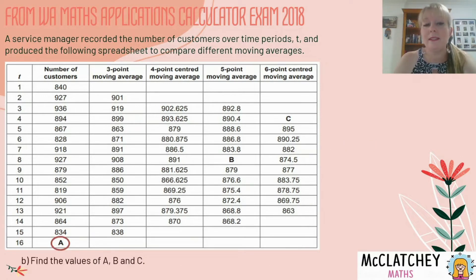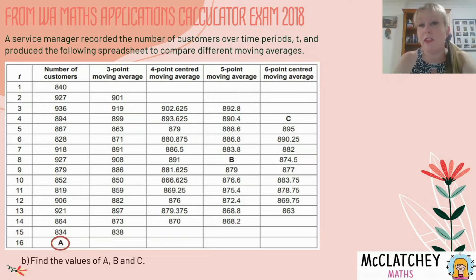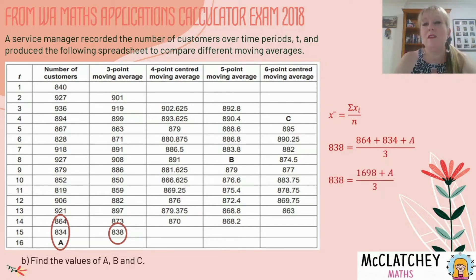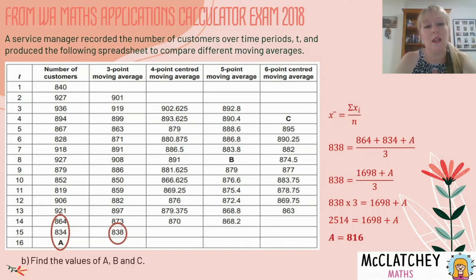Part B wants us to find the values of A, B and C. A is the number of customers. We've got a three-point moving average calculated with the three pieces of data for time periods 14, 15 and 16, so we can work backwards to find the missing piece of data. They've given us that moving average of 838, so we write our formula, substitute in the information — including 864 and 834 — multiply both sides by three, and work out that A is equal to 816.